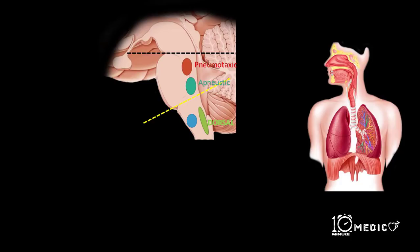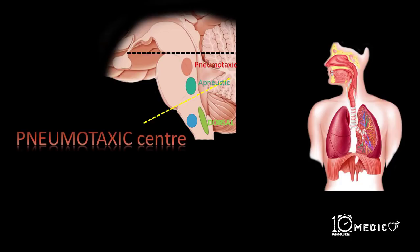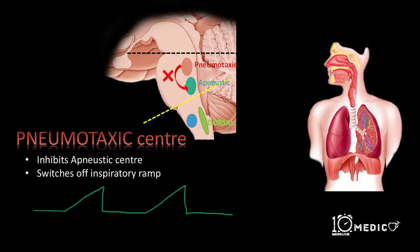Next is the pneumotaxic center, which is basically an inhibitory center. It inhibits the apneustic center and thereby switches off the ramp signals early. This results in increased respiratory rate but shorter inspiration.